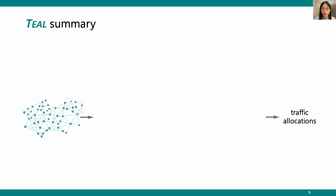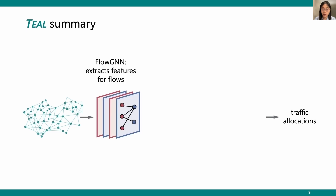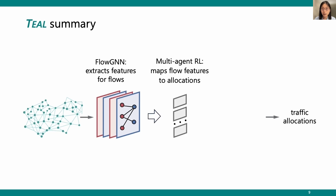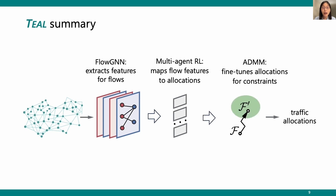Here is a summary of TEAL. TEAL is composed of three parts: Flow GNN extracts flow features to model the TE problem; multi-agent RL maps flow features to traffic allocations; and ADMM fine-tunes traffic allocations to satisfy capacity constraints.